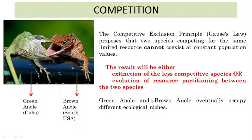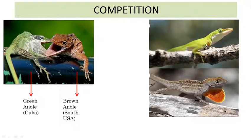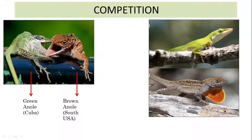For example, the green anole is found in Cuba and the brown anole has its origin from South America. When introduced together, they eventually occupied different ecological niches: the green anole occupied the upper branches of plants, while the brown anole occupied the lower branches. This demonstrates resource partitioning as a result of competition.